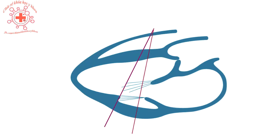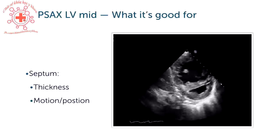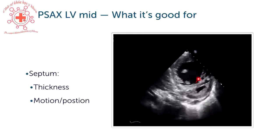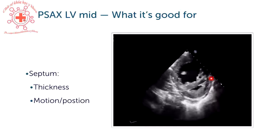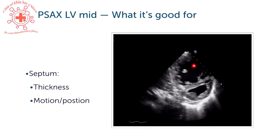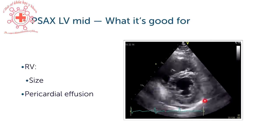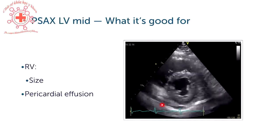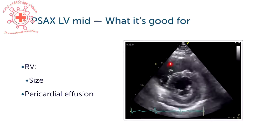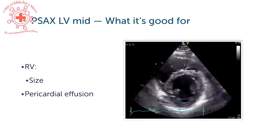The short axis view is ideal to look at the septum and its position. Here you have septal flattening in a patient with severe pulmonary hypertension — this is not a normal echo. In addition, you can assess the thickness of the myocardium, especially the septum and also of the right ventricle. Furthermore, the parasternal short axis view at the level of the ventricle is good for detecting pericardial effusion — here you see a very small effusion right in the inferior part of the heart. It is also possible to look at the relationship between the right ventricle and the left ventricle.